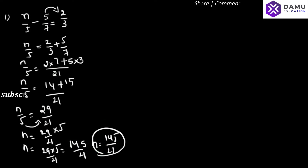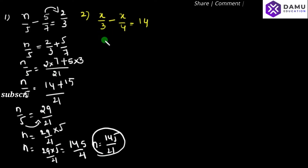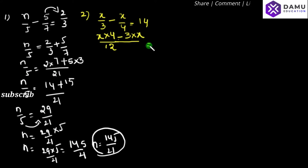Next, our second question is: x by 3 minus x by 4 will be equal to 14. Take LCM of 3 and 4 — there is no common multiple, so LCM is 12 (3 fours are 12). What we need to multiply with 3 to get 12 is 4, and what we need to multiply with 4 to get 12 is 3, so we get 4x minus 3x over 12 equal to 14.